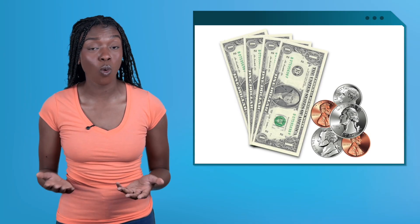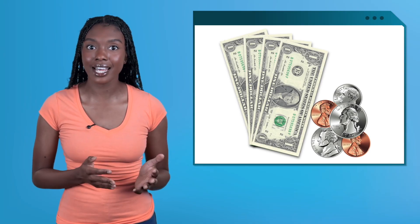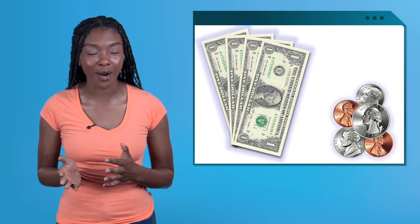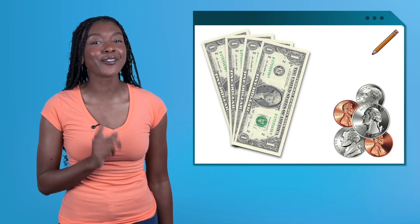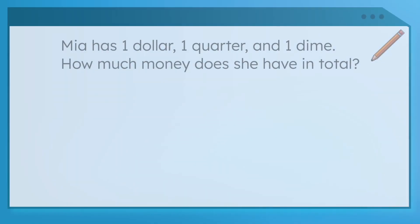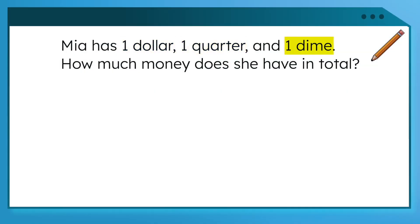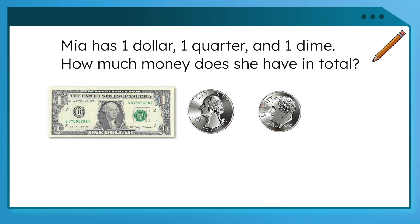Great work. Even though we can turn dollars into cents, we don't always have to. When people use dollars and coins to buy things, they keep the dollars and cents separate, adding them up part by part. Let's practice this idea with a few story problems involving dollars and coins. Grab your pencil and work with me in your guided notes. Mia has one dollar, one quarter, and one dime. How much money does she have in total?